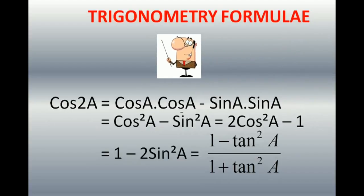Now the big boss — the Bahubali formula: cos 2A = cos²A − sin²A, which can further be written as 2 cos²A − 1, or 1 − 2 sin²A, or (1 − tan²A) / (1 + tan²A). This is the Bahubali formula because it gives a perfect relation between the double angle 2A and the single angle A. Wherever you deal with single and double angle with just one piece of information given, go for cos 2A — this is the best formula in trigonometry.